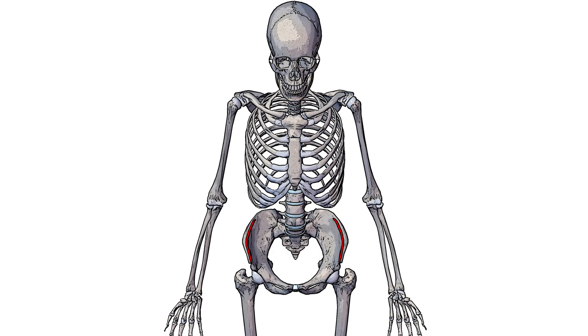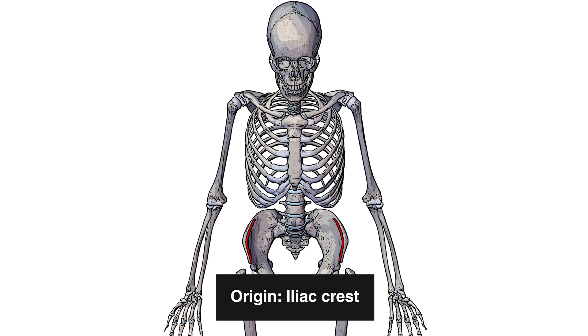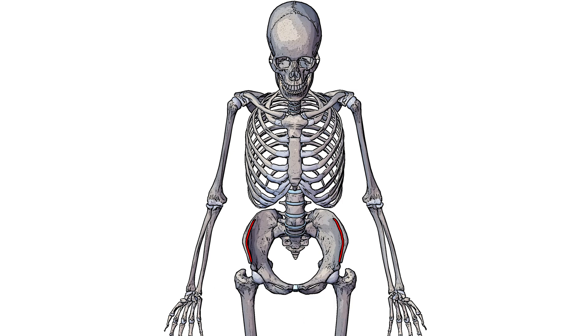So our first point of origin, marked out here in red, is going to be the iliac crest. You can see based on this origin how the transversus abdominus wraps around the side of the body.